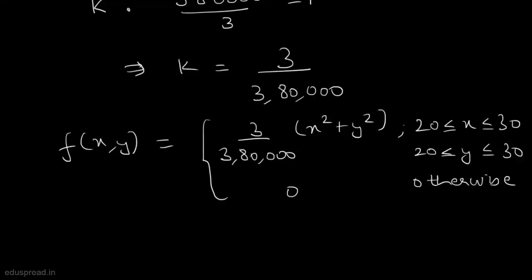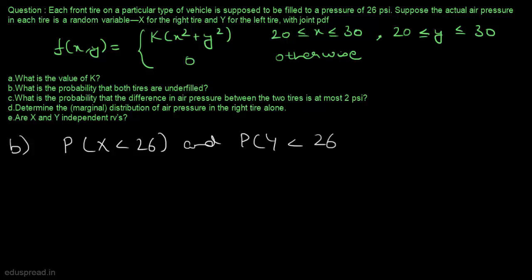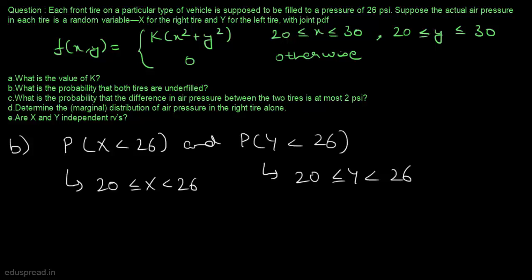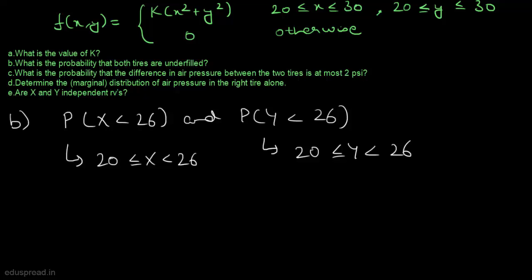Now let's move to part B. We have to find the probability that both tyres are underfilled, meaning we need to find P(X < 26 and Y < 26). That means x takes values from 20 to 26 and y takes values from 20 to 26.